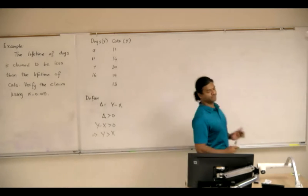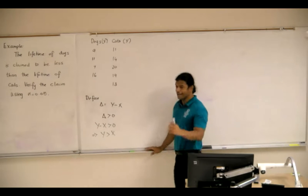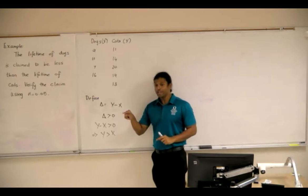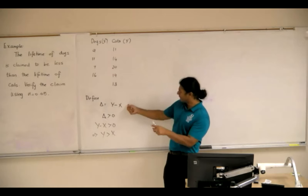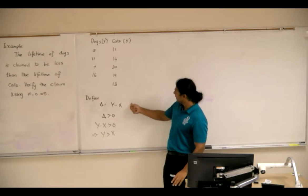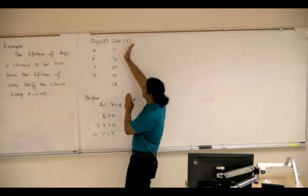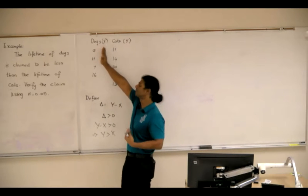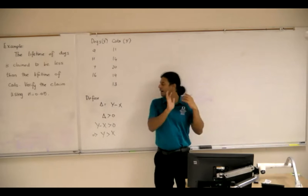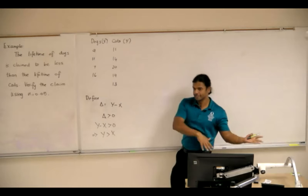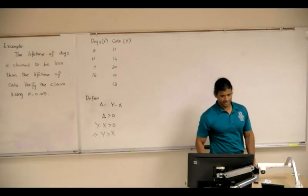Would it be wrong if you did a left tail test? Absolutely not. Would it be wrong if you did a two tail test? Absolutely not. But at the end of the day, you should be able to interpret things properly. So I define it this way, because if I reject it, I will conclude that the lifetime of cats would be greater than dogs. So the larger this becomes, the more we have, or we will be going toward the alternative, toward the claim. And we will have a right tail test.